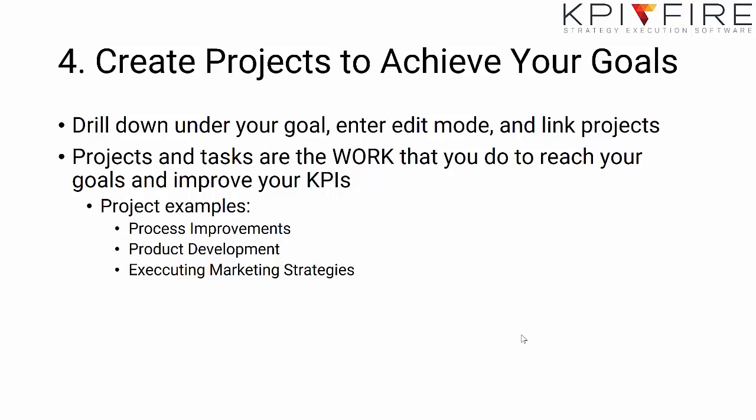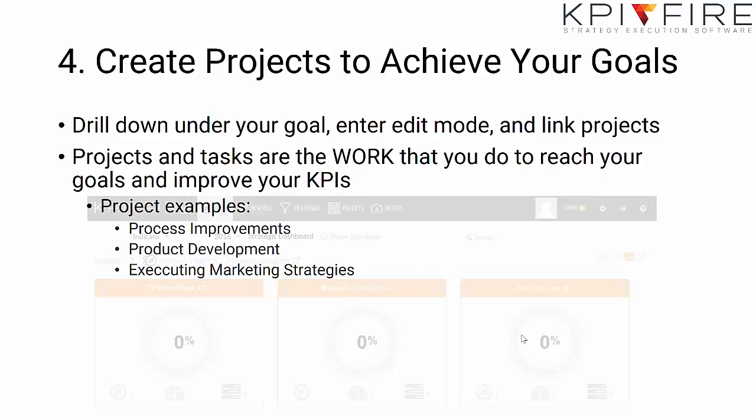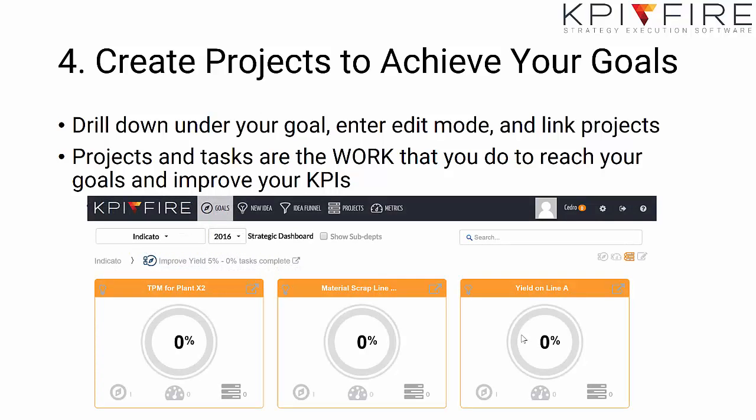Number four, we create projects to achieve our goals. Every strategic goal has a series of projects that we need to complete throughout the year to make sure we successfully achieve our goal. To do this, you just go into edit mode and link or create a new project under the goal.